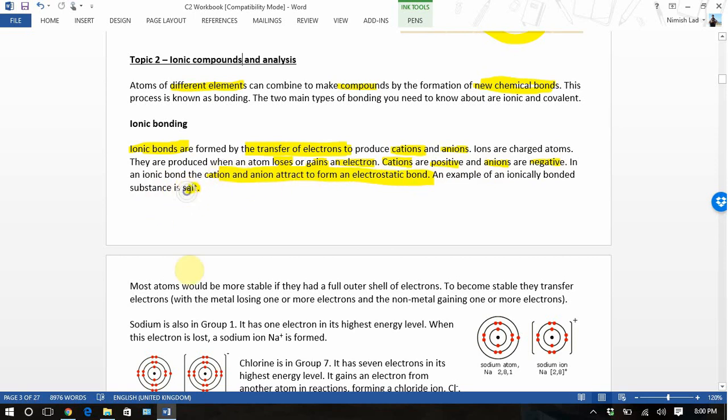Salt is sodium chloride. So we get stuck into sodium chloride over here. Most atoms would be stable if they had a full outer shell of electrons. To become stable, they transfer electrons. That's that process that we're talking about right now, transferring electrons.